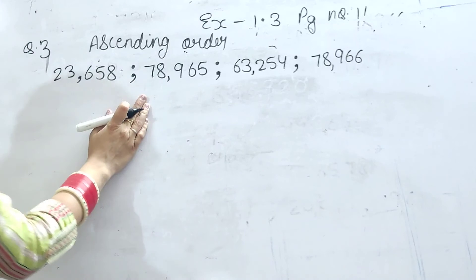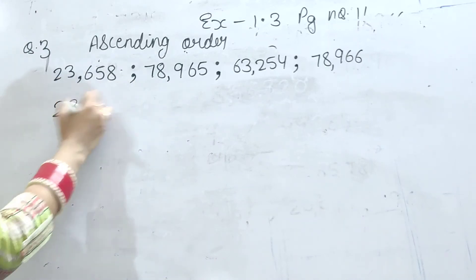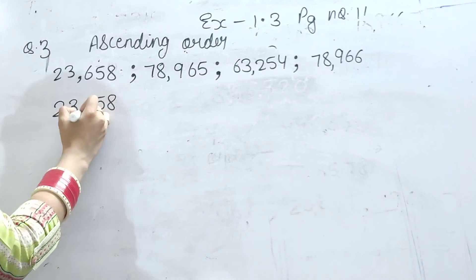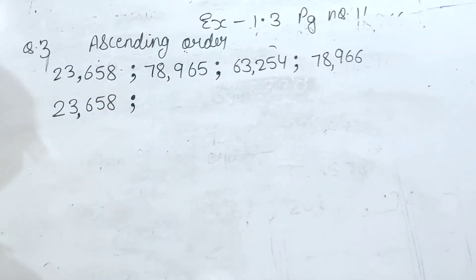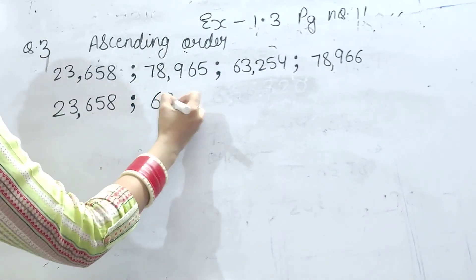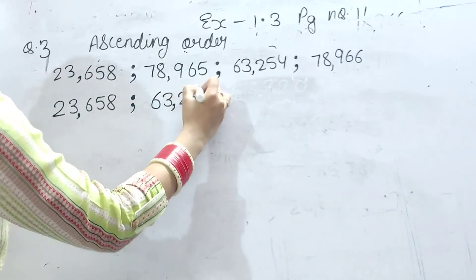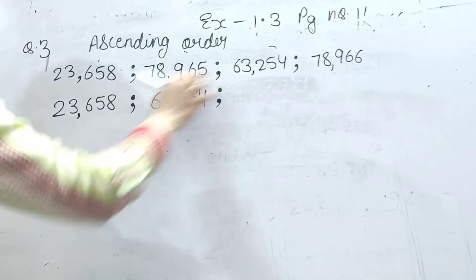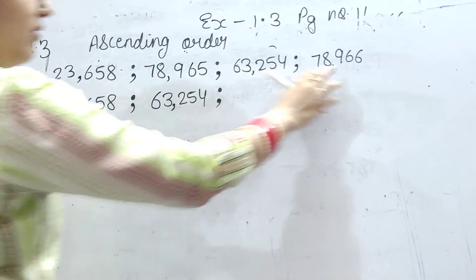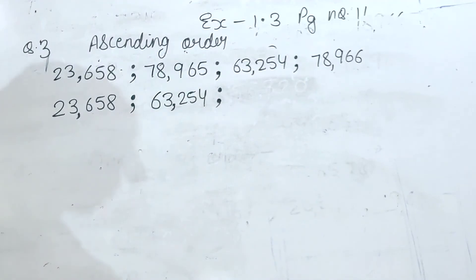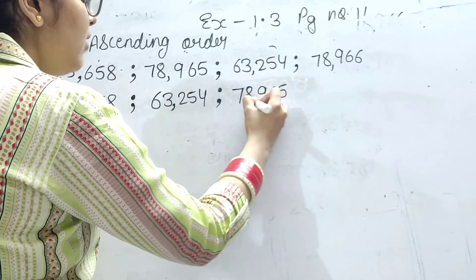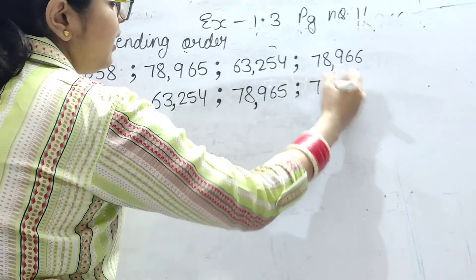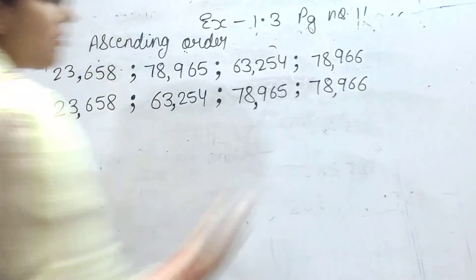Sabse chota number yaha pe kaun sa hai? 23,658. Fir usse bada number kaun sa hai? 63,254. Usse bada number kaun sa hai? 78,965 ya 78,966 — this one is greater: 78,966. Aur sabse bada number kaun sa hai? 78,966. Yeh hai aapka ascending order.